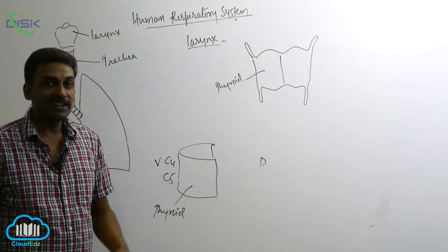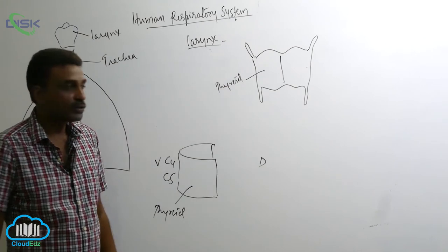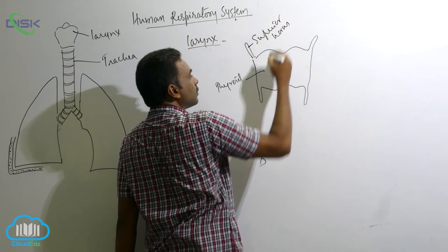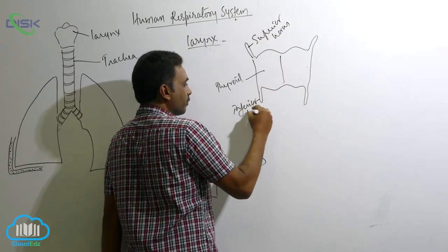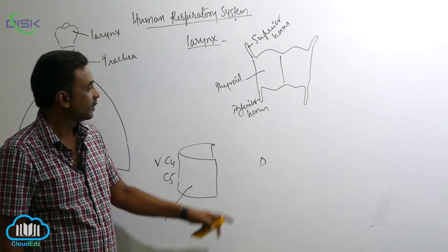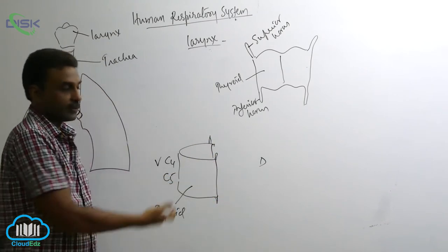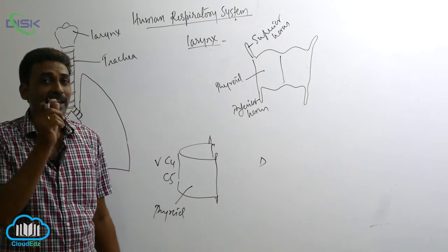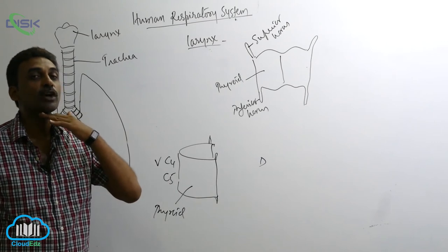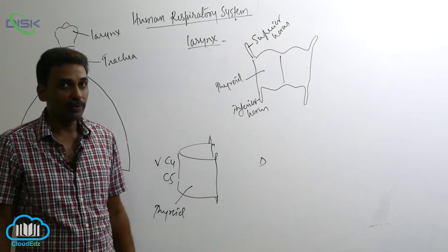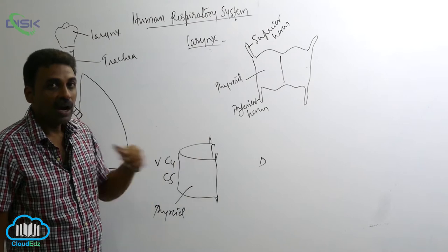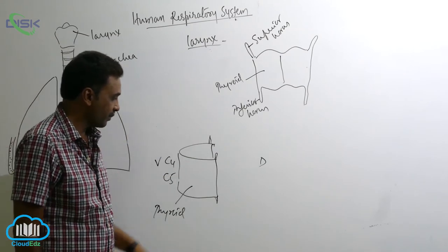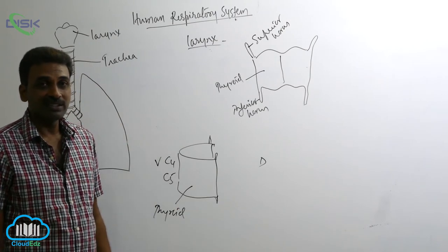Anteriorly and posteriorly, the thyroid cartilage has horns — superiorly and inferiorly — also called cornua. The superior horns are connected by the thyrohyoid ligament to the hyoid bone, which is present at the bottom of the buccal cavity. The inferior horns are articulated with the cricoid.